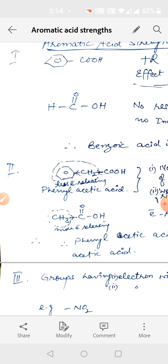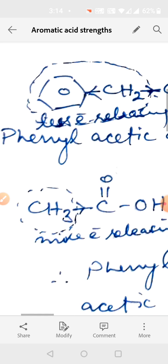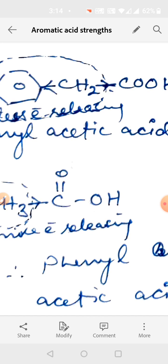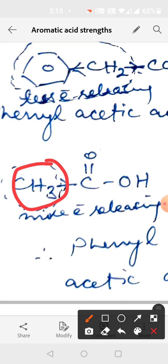So benzoic acid is a weaker acid than formic acid. Then coming to phenyl acetic acid and acetic acid. In case of acetic acid, there is CH3 group which has electron releasing tendency which is going to destabilize this group.